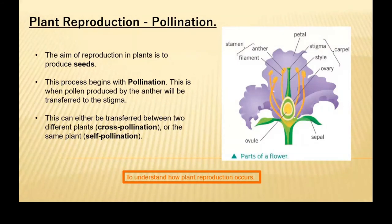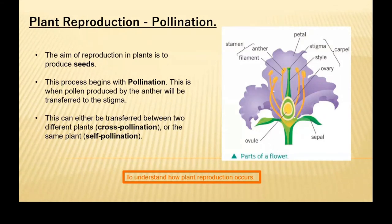Now, interestingly about plants, they can do this by two different methods. This can happen between two different plants, which is known as cross-pollination. Or they can actually fertilize themselves, which is self-pollination. That is because they do possess both male and female reproductive systems. Self-pollination is slightly disadvantageous, because what we want is genetic variation, and self-pollination doesn't allow for that.